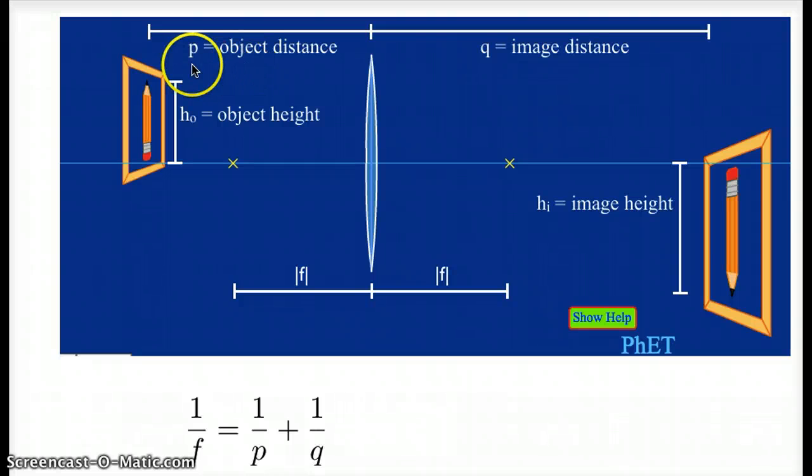But in general, distances on the left here are negative distances. Distances on the right, what we call the real side, are positive distances.